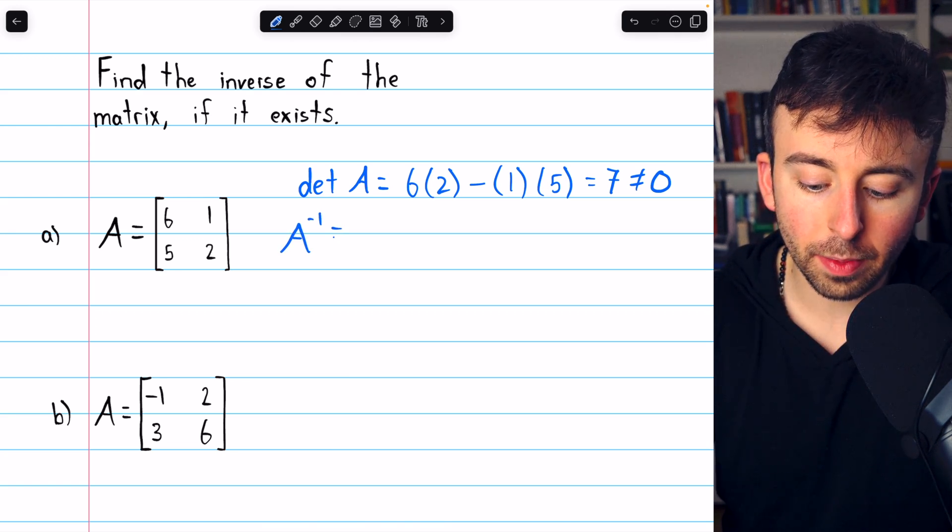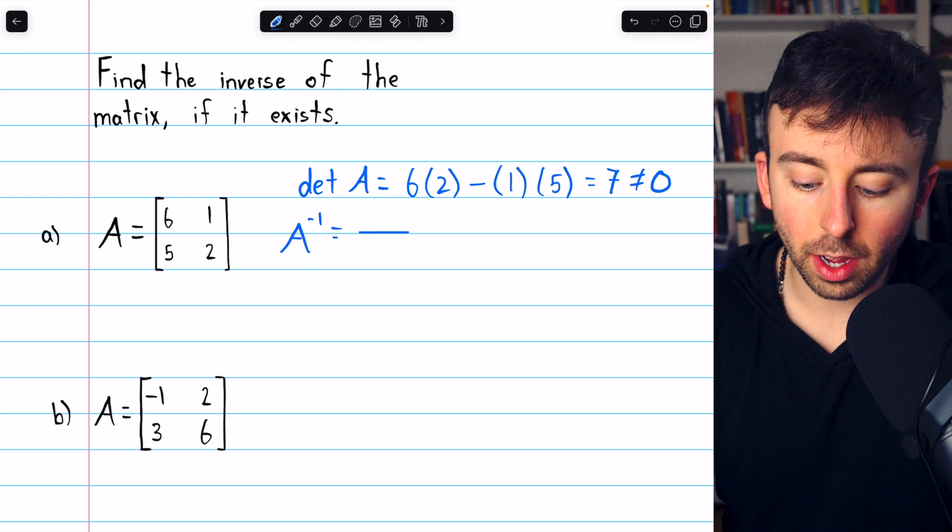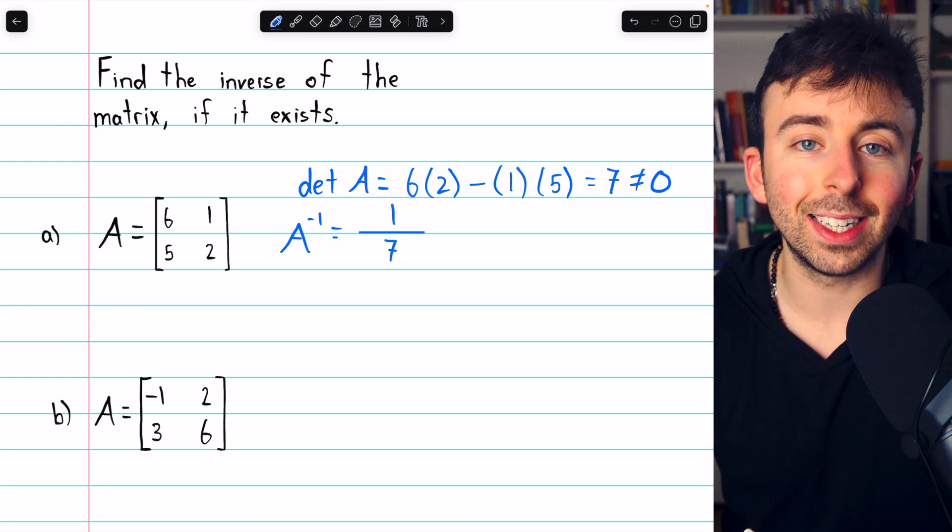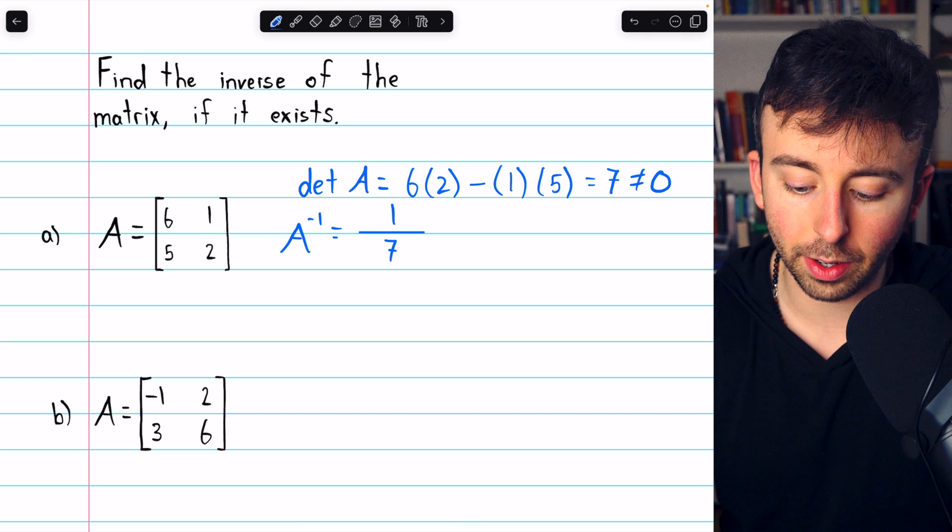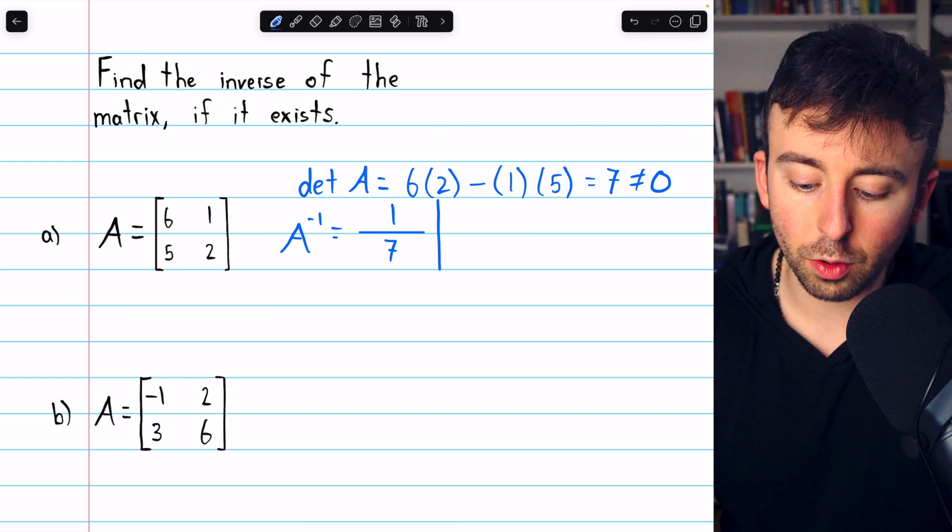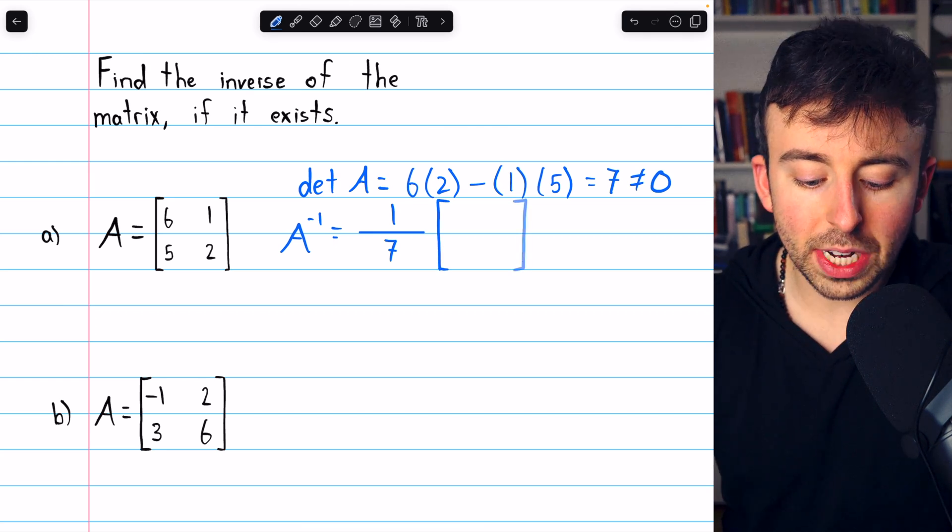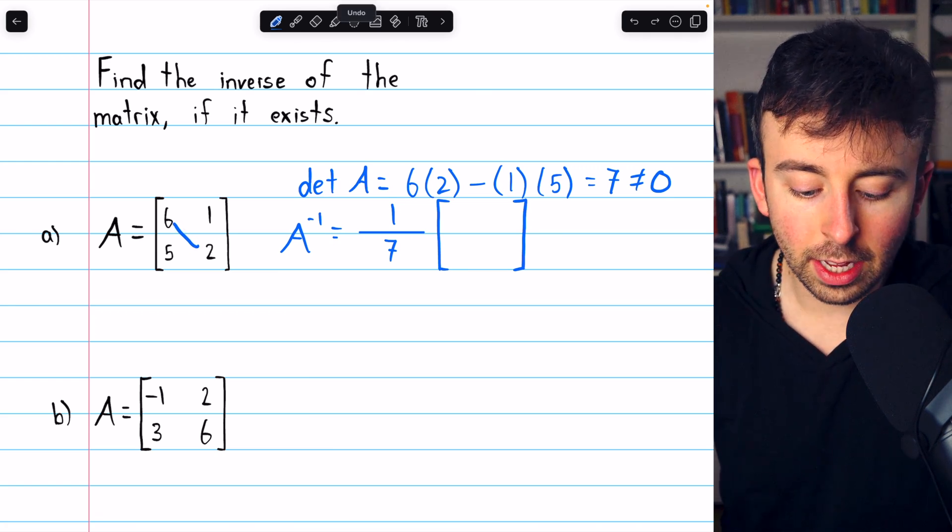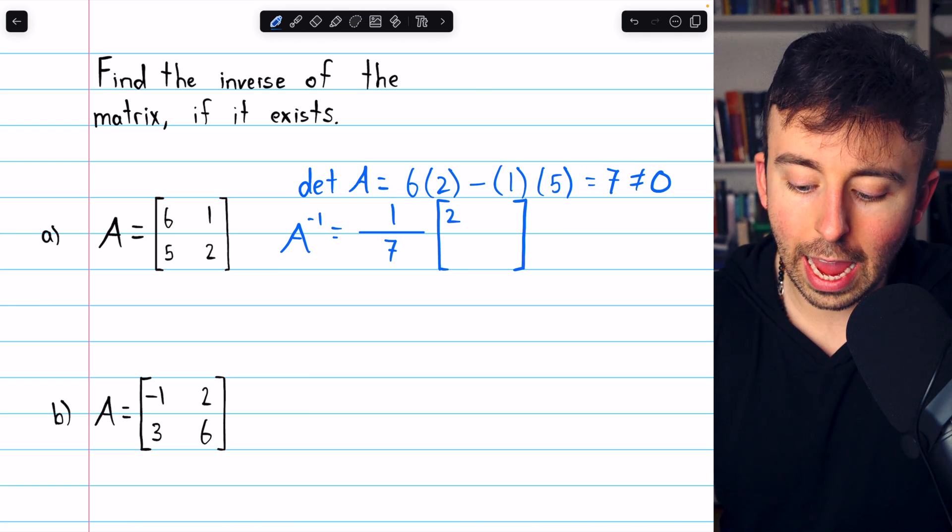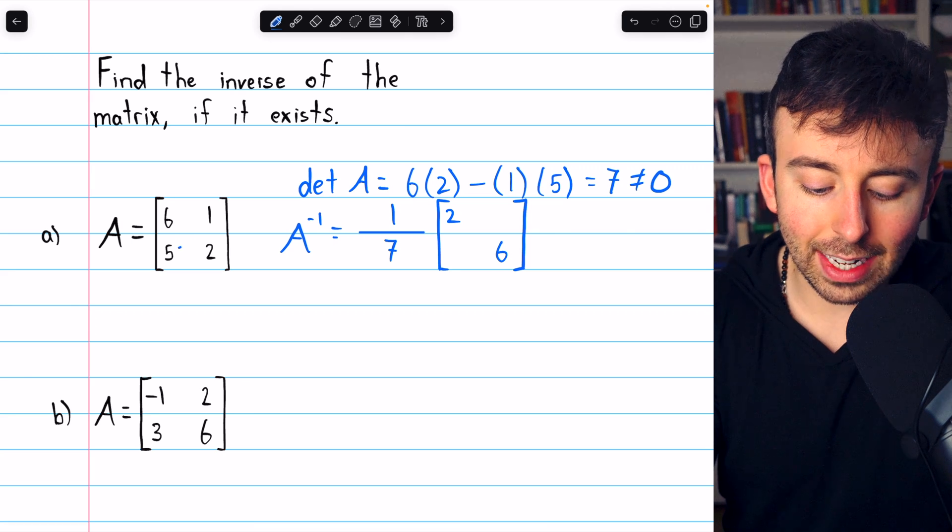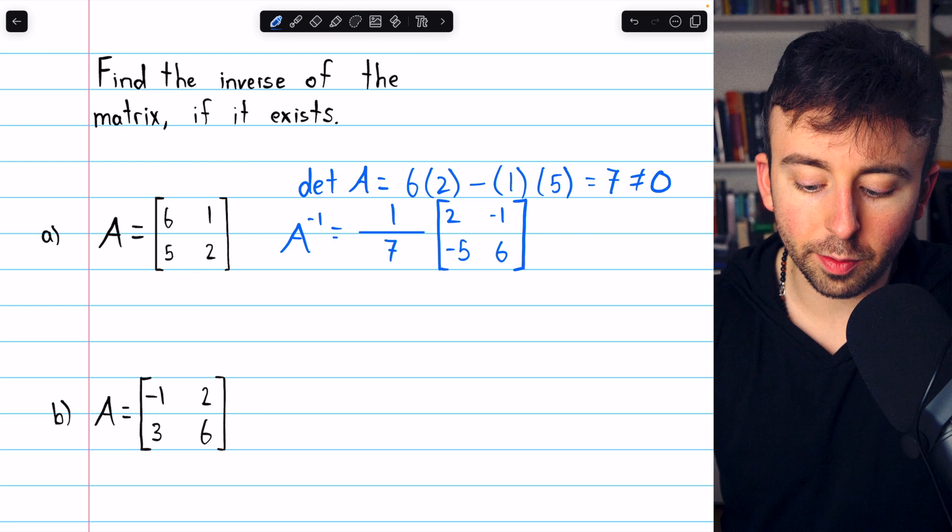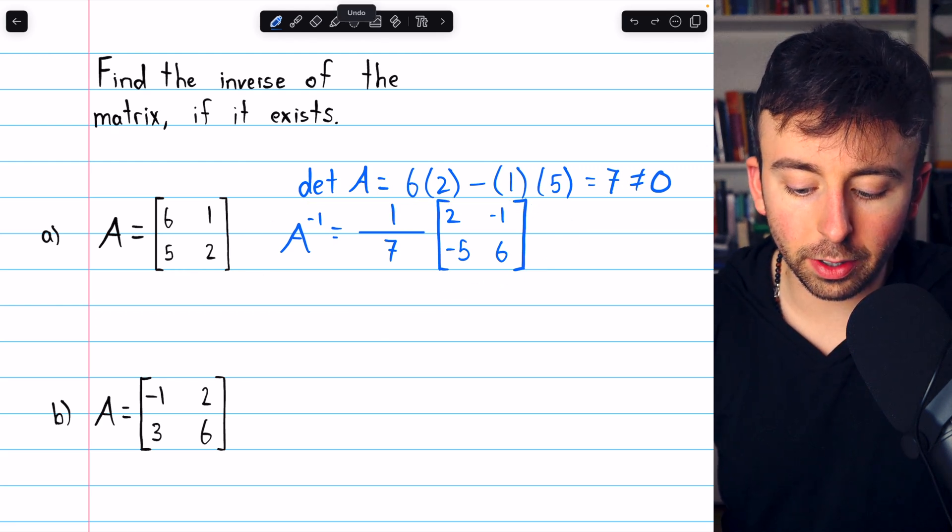How do we find it? Well, we need a scalar of 1 over the determinant. We just found the determinant is 7, so 1 over 7. And then we have to multiply this by—we take matrix A and then just flip the diagonal, so it becomes 2 and 6, and then negate along that counter diagonal, so negative 1 and negative 5. This is A inverse.